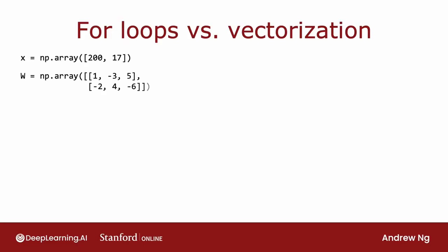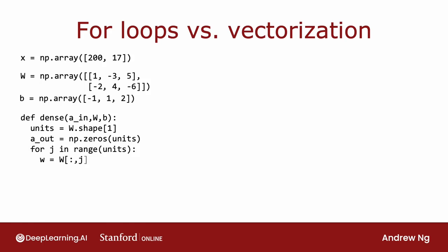Here on the left is the code you had seen previously for how you would implement forward propagation in a single layer. X here is the input, W the weights of the first, second, and third neurons, parameters B, and this is the same code as what you saw before.